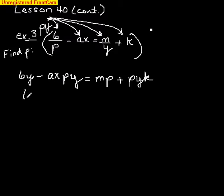Equals ax py plus, so I'm just adding ax py to both sides so I added it over here, plus mp plus pyk and obviously the order doesn't matter because they're all addition. So all the p's are on one side and what's not a p is on that side.